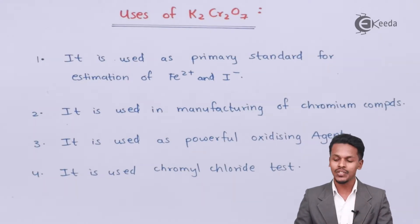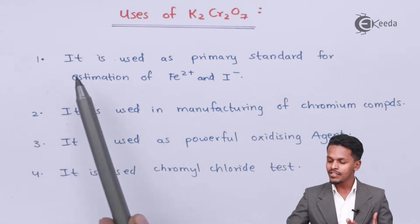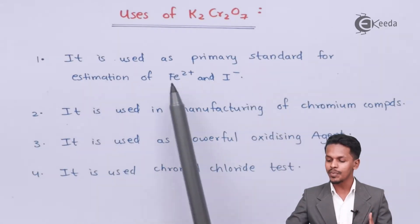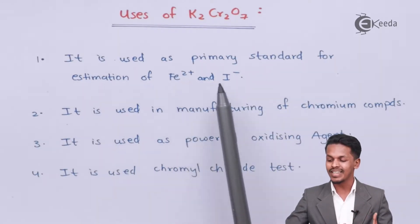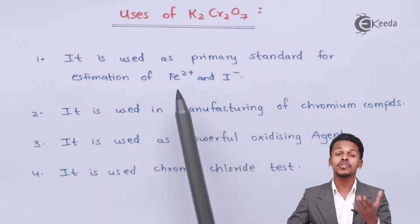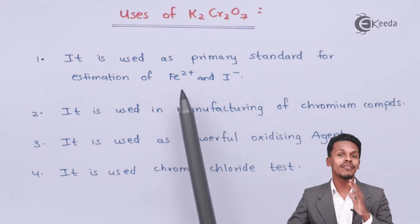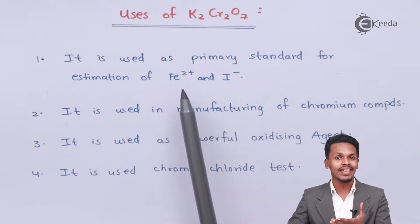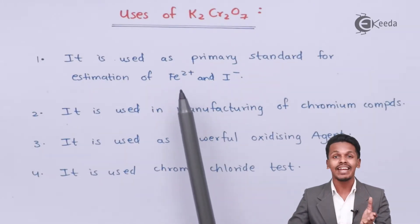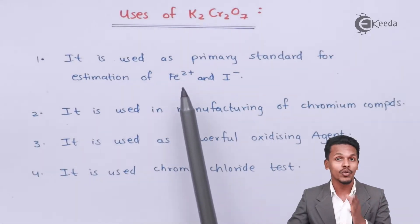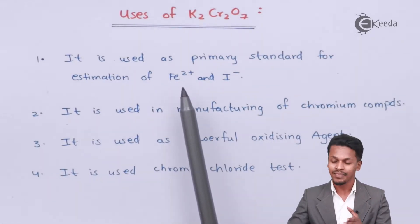Starting with the first use: K₂Cr₂O₇ is used as a primary standard for the estimation of Fe²⁺ and I⁻ ions. We have discussed that Fe²⁺, that is ferrous sulfate, can be converted into ferric ions, and based on that color change we can estimate whether Fe²⁺ ions are present or not.